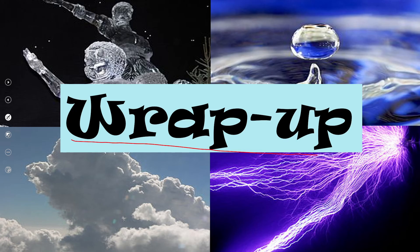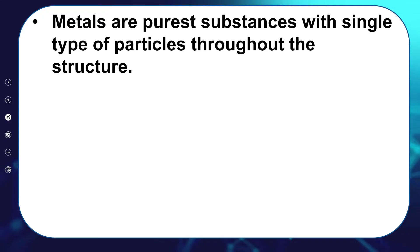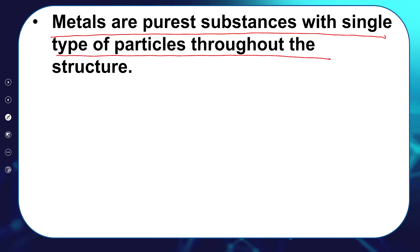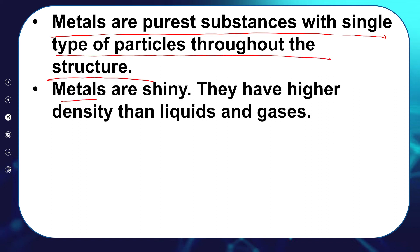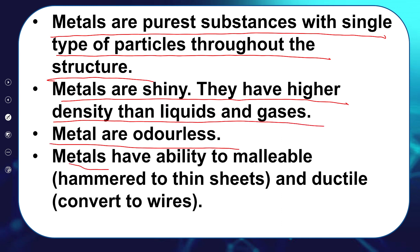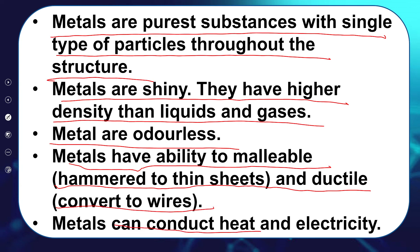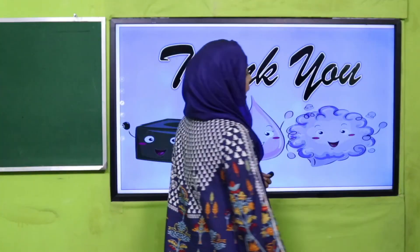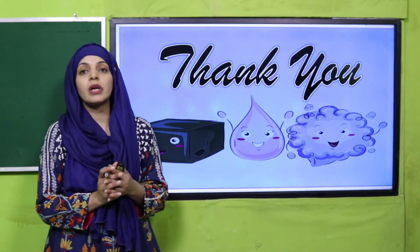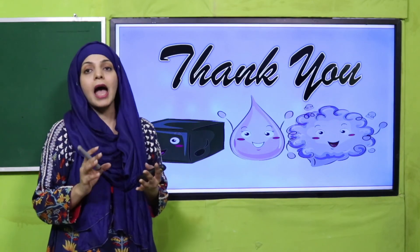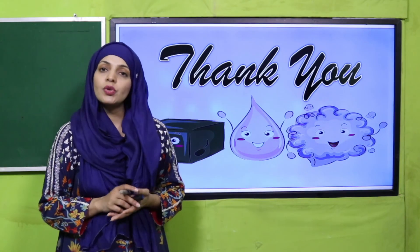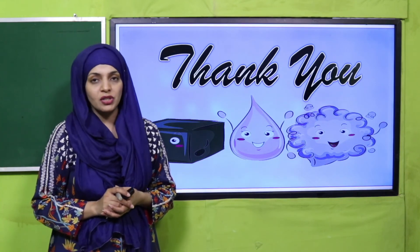Wrap-up: metals are the purest substances with a single type of particles throughout. Metals are shiny and have higher density than liquids and gases. Metals are odorless. They are malleable — can be hammered into thin sheets — and ductile — can be converted into wires. Metals can conduct heat and electricity. I hope you now understand this type of matter and all its properties. Keep everyone around you safe, have a good day, thank you so much, and Allah Hafiz.